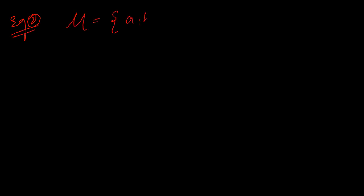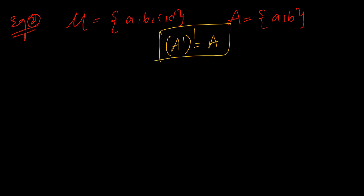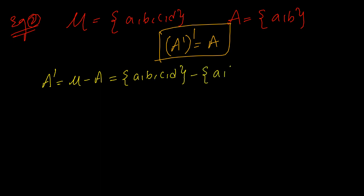Let me give you one more example. Example number 2. We will take universal set as {A, B, C, D} and let A set be {A, B}. We need to prove A complement whole complement is nothing but A. First, let us find A complement. A complement is nothing but mu minus A. Mu is {A, B, C, D} minus {A, B}. We remove the common terms and take leftover terms in the first set, which is {C, D}.